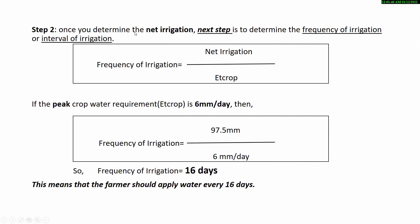Step 2: Once you determine the net irrigation, the next step is to determine the frequency — or interval — of irrigation. Frequency of irrigation equals net irrigation divided by the reference crop evapotranspiration. If the peak crop water requirement is 6 mm per day — as we calculated 7.5 mm but considered 6 mm per day by thumb rule — and the net irrigation is 97.5 mm multiplied by 1 meter, then the frequency of irrigation equals 16 days.